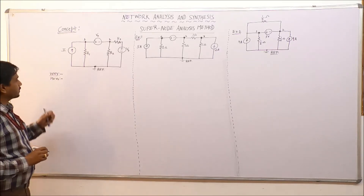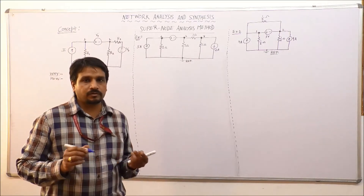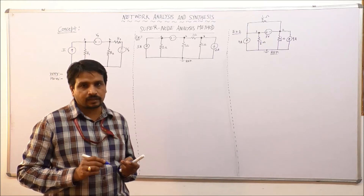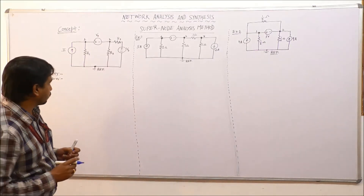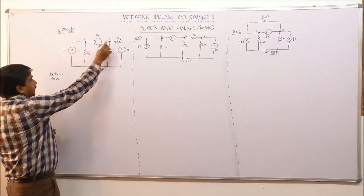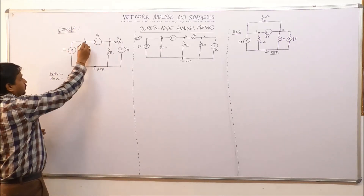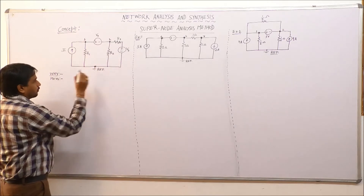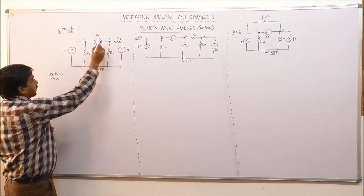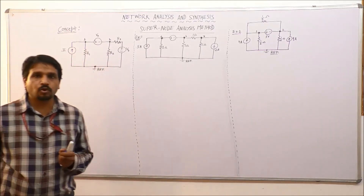This super node analysis method is particularly applicable to networks in which we have a voltage source connected between any two nodes. As we can see in this particular network, we have node 1, node 2, and one reference node. Between node 1 and node 2 we have an independent voltage source.